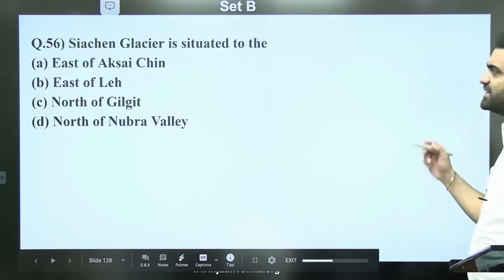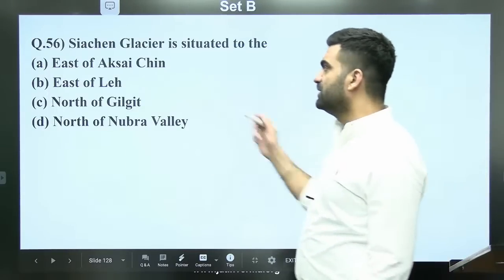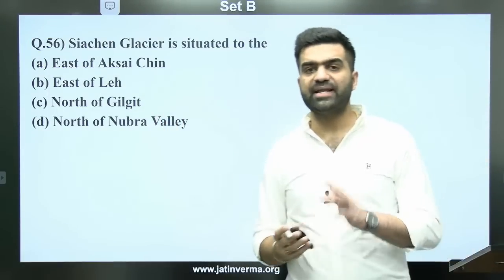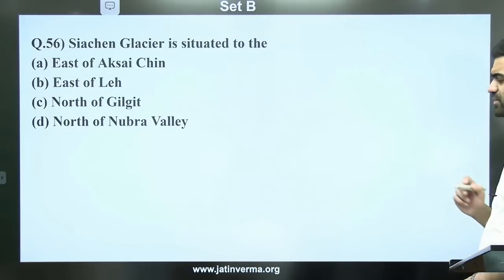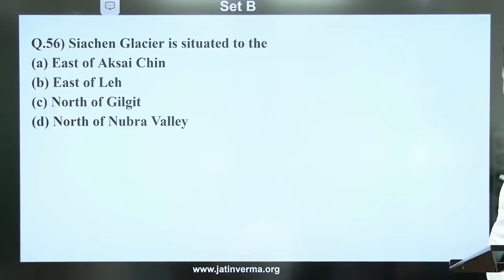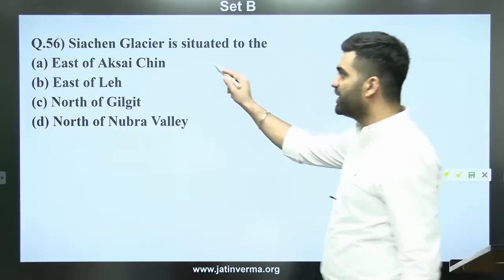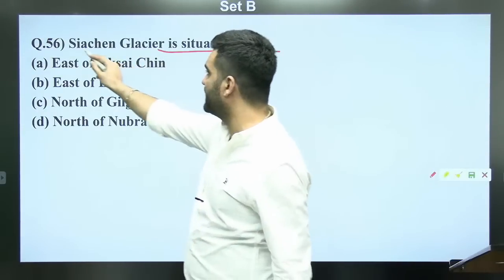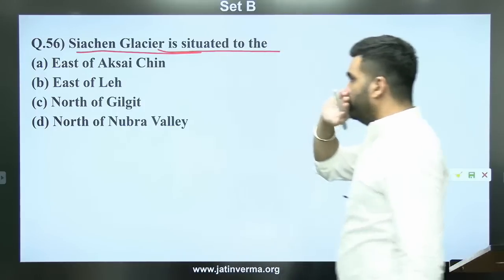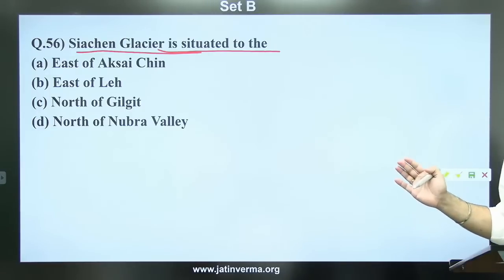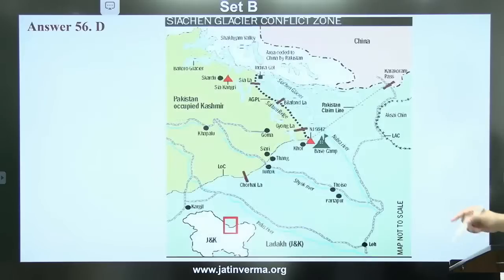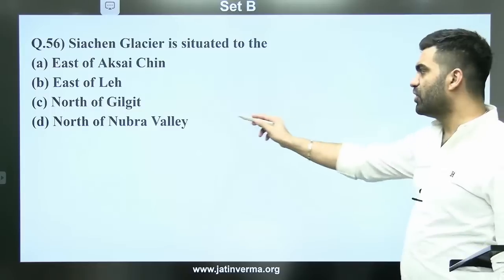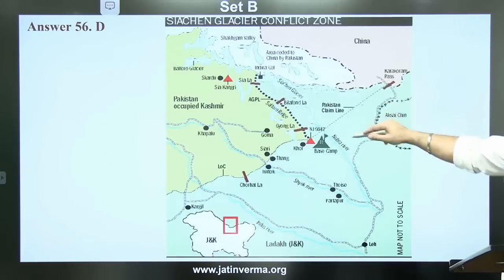Question 56: Siachen Glacier is situated — this was an obvious question given the ongoing India-China border crisis at Pangong Tso. The daily news analysis channel covered this repeatedly, with reminders to study the geography. The answer to question 56 is D — it is located north of Nubra Valley.